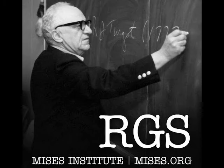Rothbard says a profit opportunity means that some factors are underpriced. Entrepreneurs buy factors of production, wait for the product to be produced, then sell it, and the return exceeds the interest return. Of course, if you thought factors were overpriced and had sophisticated markets where you could short sell, you could profit the other way too — if you thought a stock was overpriced, you could short it and earn profit when the price came down. In the more general case, as long as factors are mispriced, an entrepreneur can profit by speculating one way or the other.